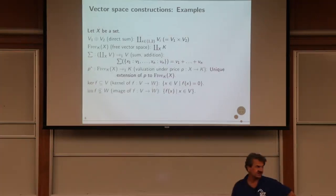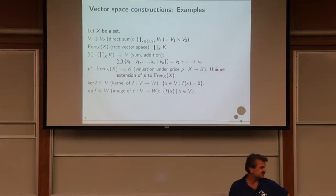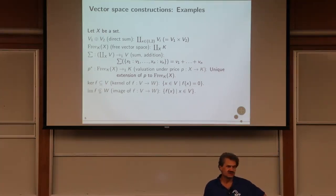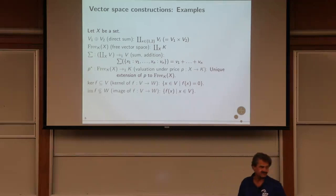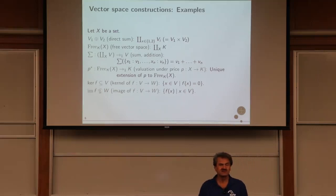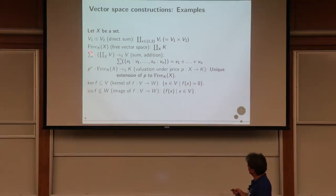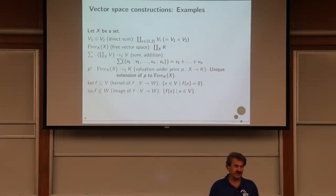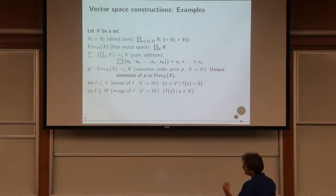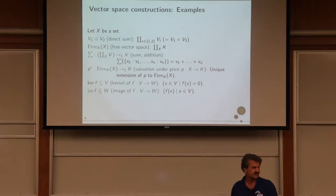Let's look at examples of vector space constructions. For a set X, the direct sum of two vector spaces is a coproduct where the index set is just {1, 2}. The free vector space is also a coproduct, but the underlying vector space is the field k itself. It's called the free vector space because for any given set it builds a vector space that has that set as its basis. Every mapping from X to some vector space can be mediated by going first into the free vector space and then through a linear map.